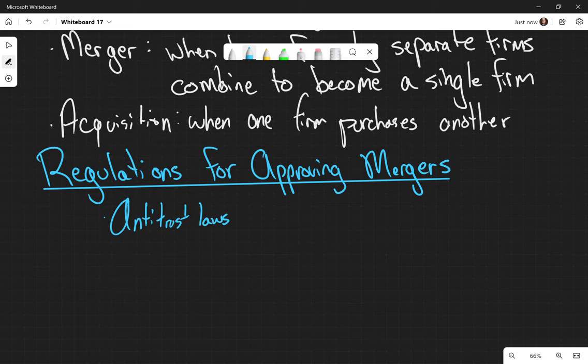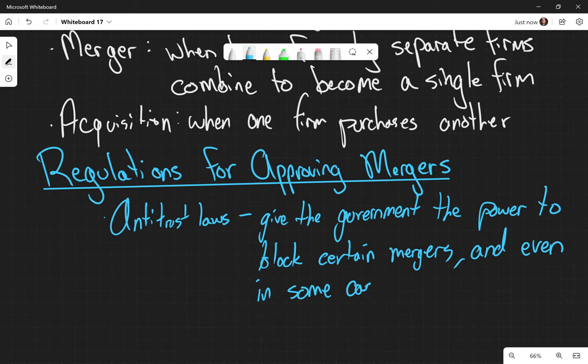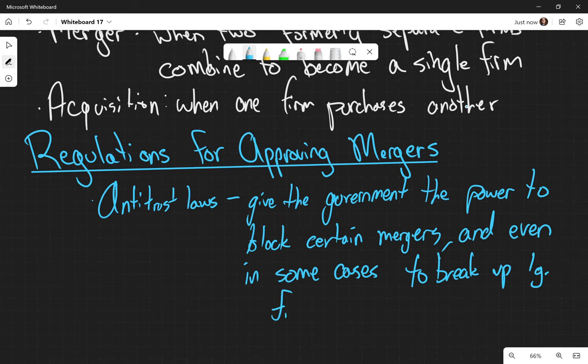So these are laws that give the government the power to block certain mergers and even, in some cases, to break up large firms into smaller firms.